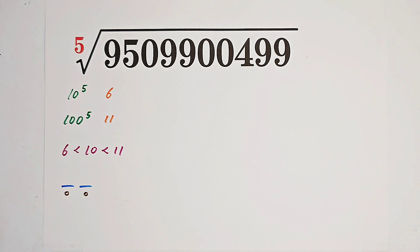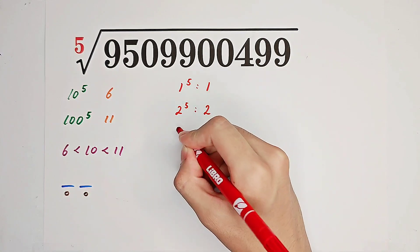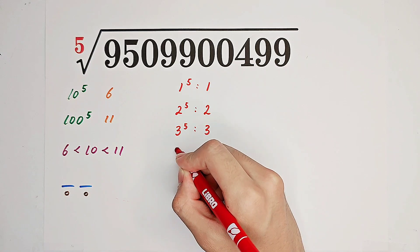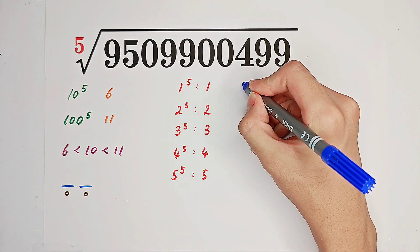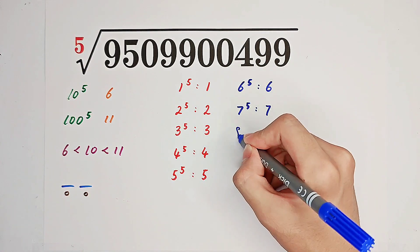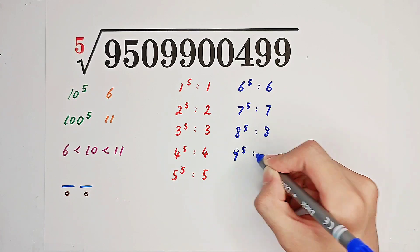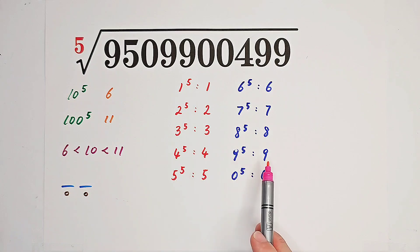There is a splendid property we can use. Pay attention: the unit digit of the fifth power of any number is equal to the unit digit of that number. You can construct a table and consider the cases from zero to nine. The unit digit of 1^5 is 1, of 2^5 is 2, of 3^5 is 3, of 4^5 is 4, of 5^5 is 5, of 6^5 is 6, of 7^5 is 7, of 8^5 is 8, of 9^5 is 9, and of 0^5 is 0.